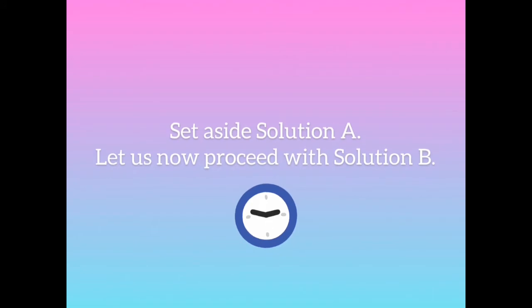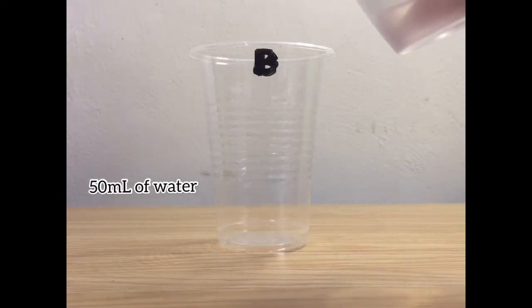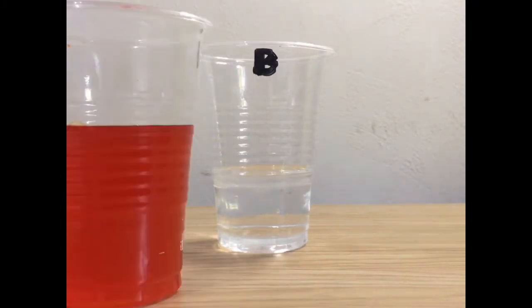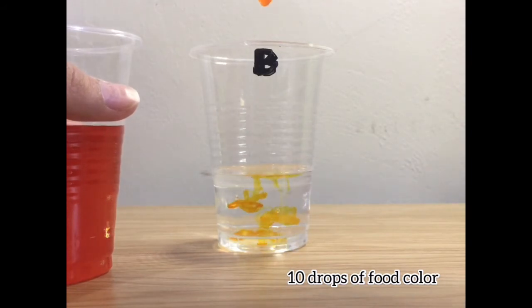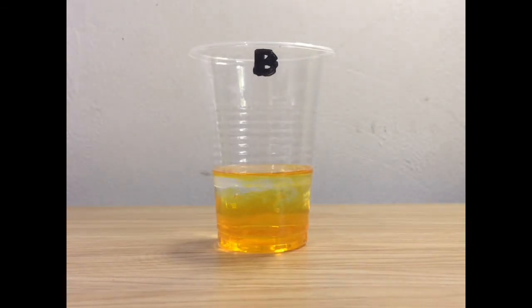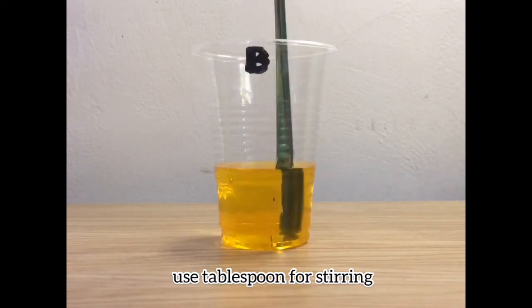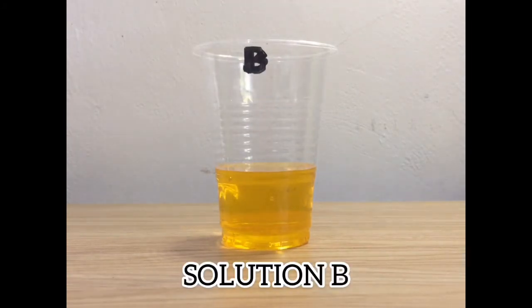Let us now proceed with solution B. Let us use the same procedure in cup B. Put 50 ml of water. This time, put 10 drops of food color on cup B, which contains 50 ml of water. As you can see, the color of the water is starting to change. Stir the liquid using the tablespoon until all the food color is dissolved in water. The final result is the solution B.